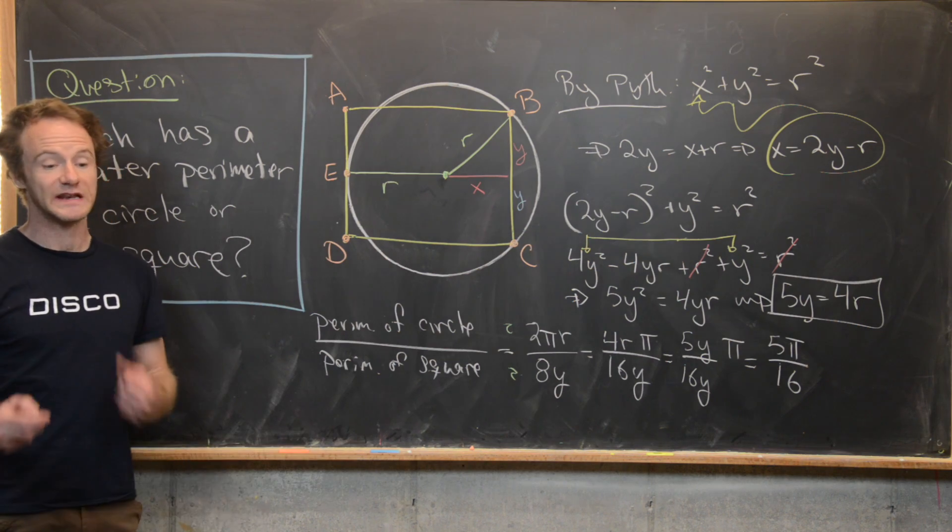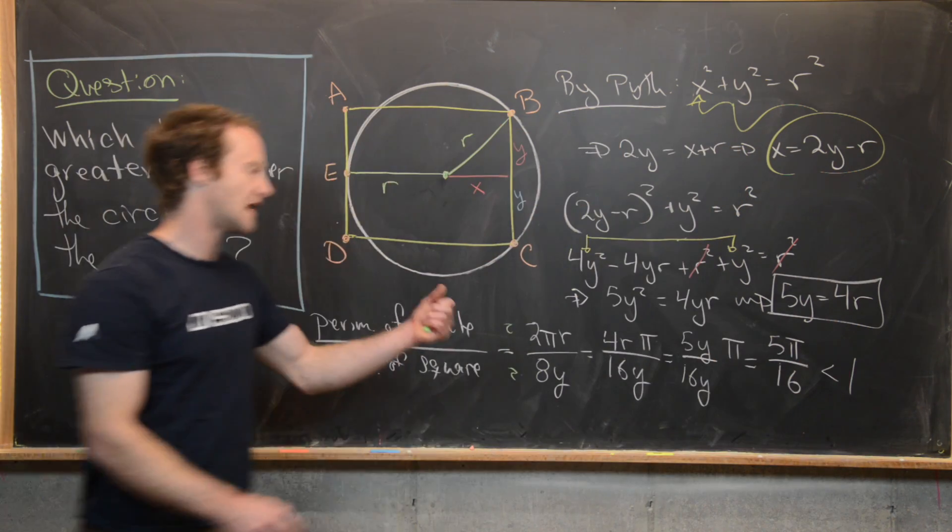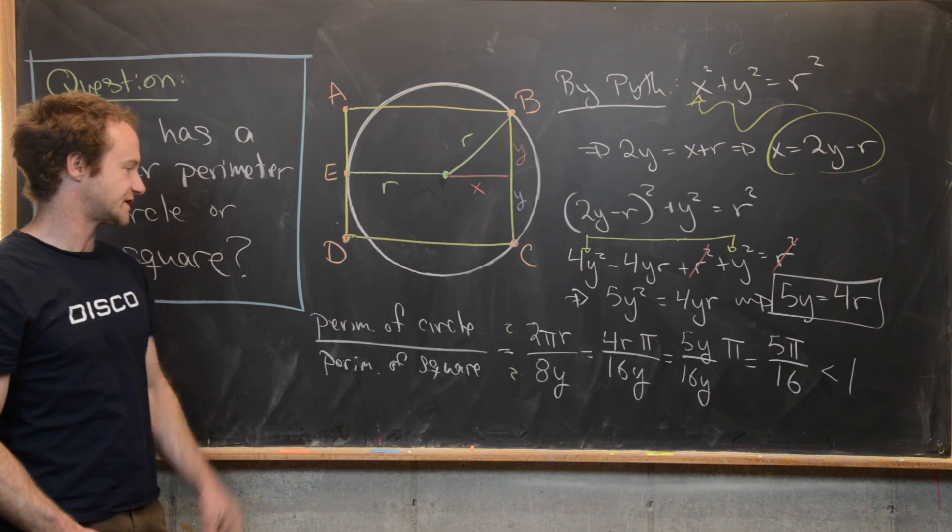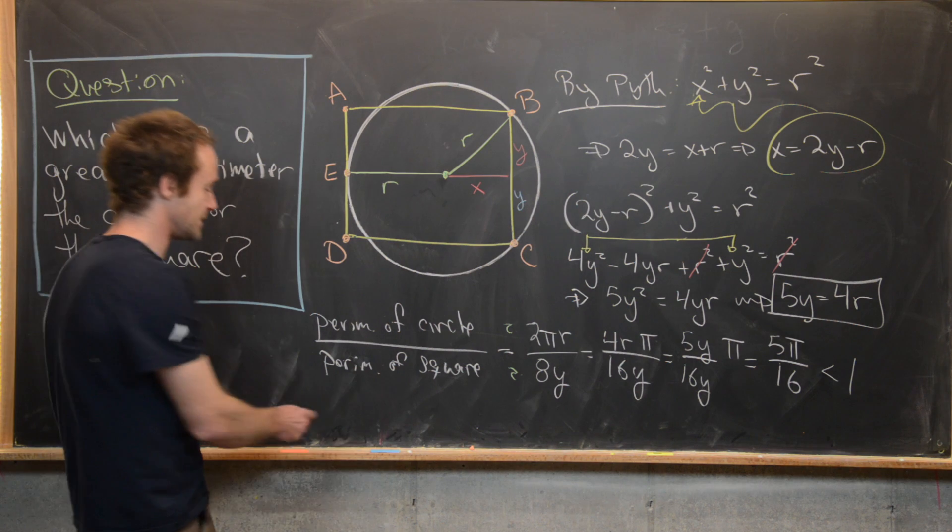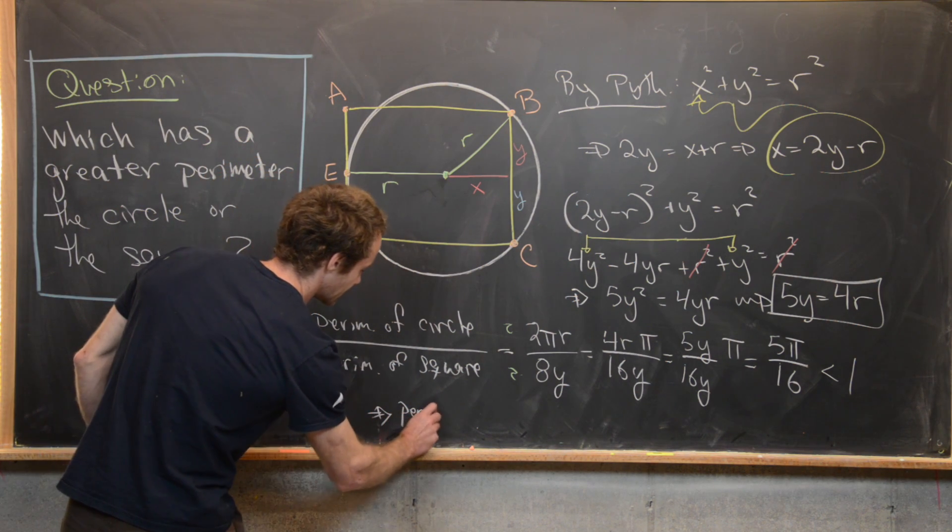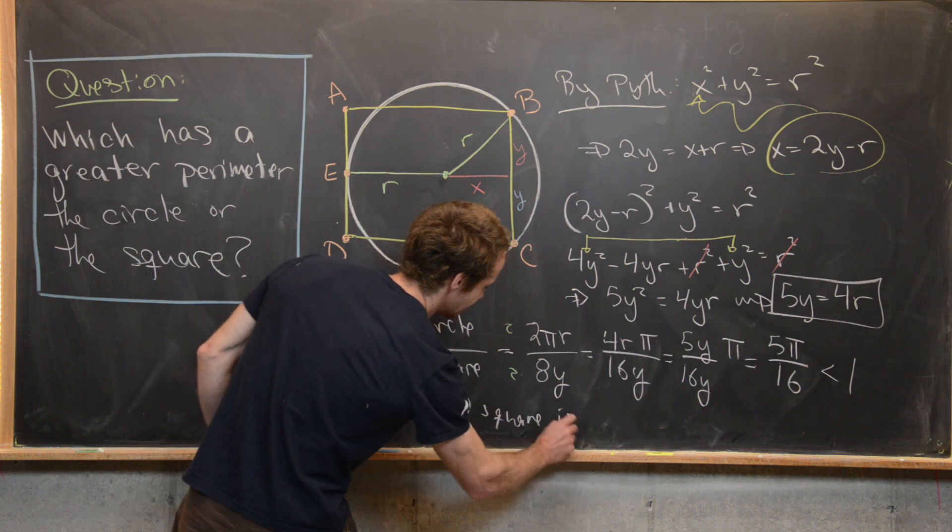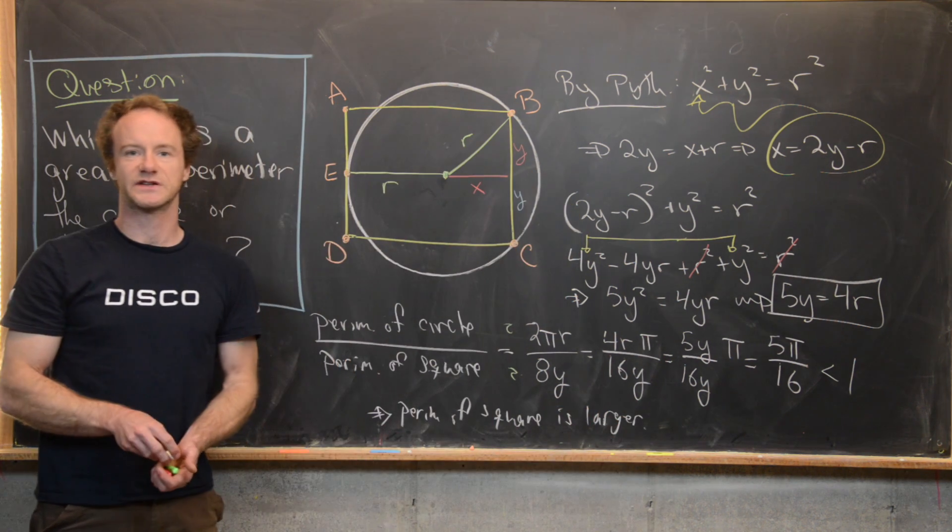And then, well, you can easily check that is less than 1. So 5π over 16 is less than 1. But that means the quotient of the perimeter of the circle and the perimeter of the square is less than 1. But that tells us that the perimeter of the square is larger. And that's a good place to stop.